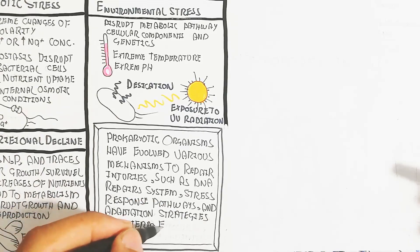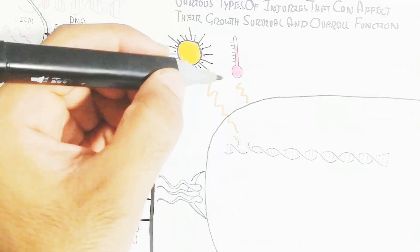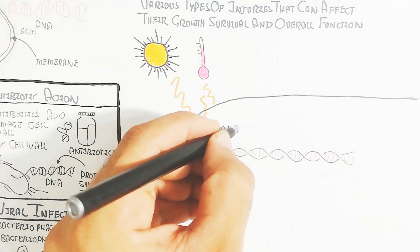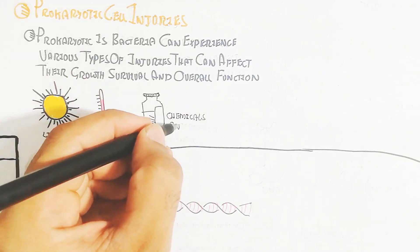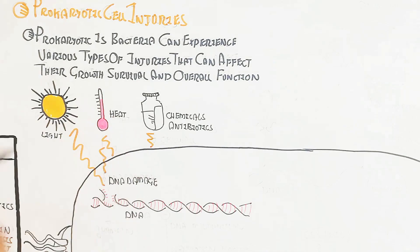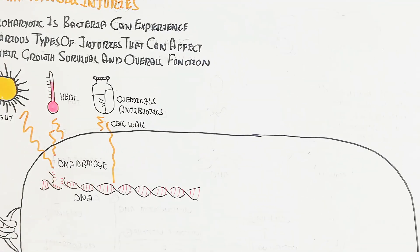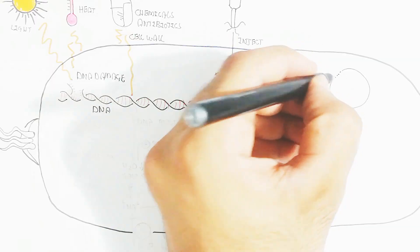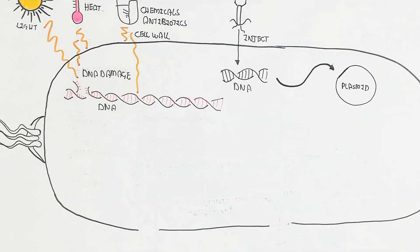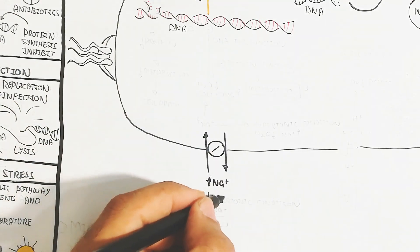Long-term exposure to injury-triggering agents causes damage to the bacterial cell, though repairing mechanisms are also present. UV radiation, heat, and chemicals like antibiotics can target the cell wall or DNA, leading to DNA damage. After DNA damage, the bacteriophage can invade and inject its DNA, which binds with the plasmid, making the plasmid recombinant.